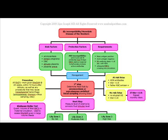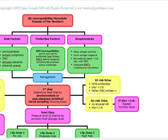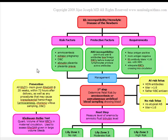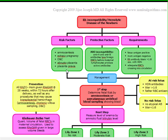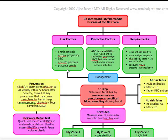We're going to go over the risk factors, protective factors, and requirements. Risk factors for RH incompatibility include amniocentesis, ectopic pregnancy, DNC, abrupto placenta, and placenta previa. This can happen when the woman is transfused with mismatched RBCs, or when fetal RBCs enter the mother's circulation transplacentally at delivery.